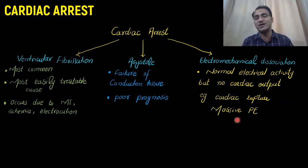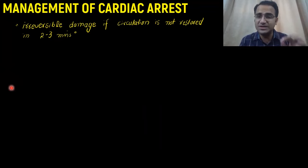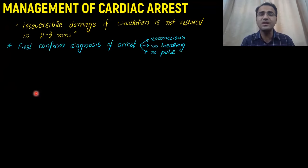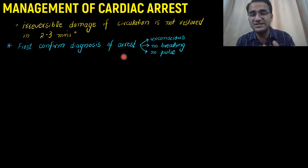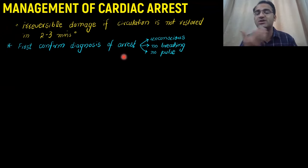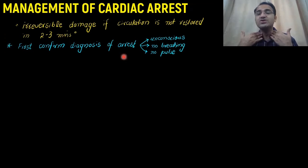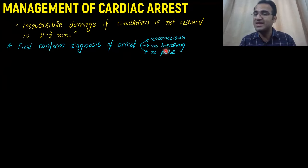Electromechanical dissociation can occur in cardiac rupture or massive pulmonary embolism. When a patient presents with cardiac arrest, remember that irreversible damage to the brain will take place if circulation is not restored within 2-3 minutes, so you must attempt to restore circulation within that time. First, confirm the diagnosis: the patient should be unconscious, with no breathing and absent major pulses. Check the carotid pulses — not peripheral pulses — because in hypotension peripheral pulses may be absent but carotids will still be present. If the major pulse is absent and there is no breathing, you make the diagnosis of cardiac arrest.